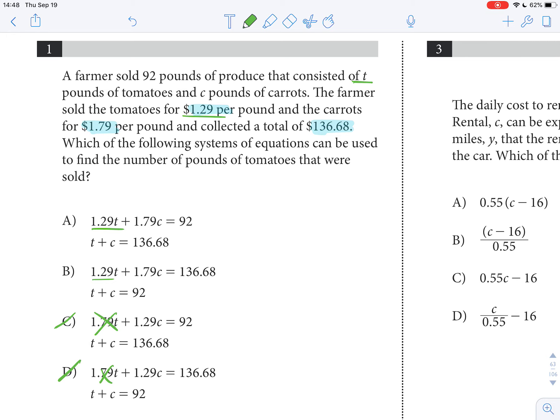And then, as we said, the carrots cost $1.79 per pound, so that has to be with the c. So again, A and B are good.